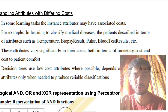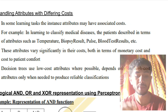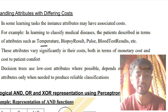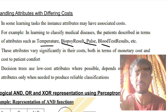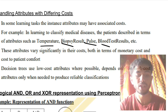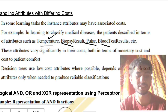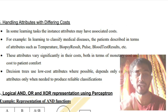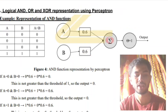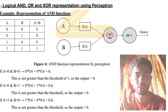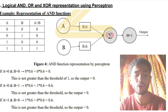The last 'H' is handling attributes with differing costs. To calculate a disease for a person, many attributes are considered — temperature, biopsy results, pulse, blood test — and they have different costs. We prefer the attribute that has the lowest cost and classifies the best. That's the last issue: AIAHH.